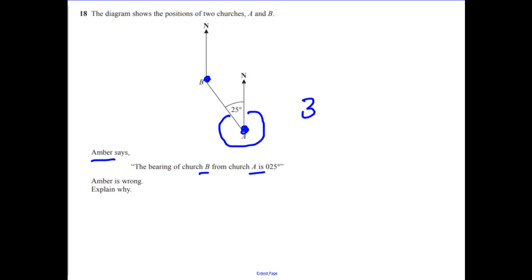So it's going to be 360. It's 360 degrees in one complete turn. And take away the 25. So it should be 335 degrees. I'm explaining why she's wrong. Because it should be measured clockwise. Looks like she's done it anticlockwise.